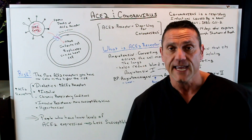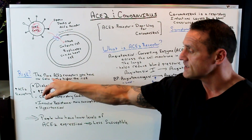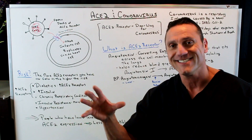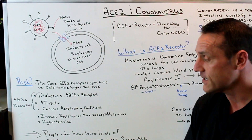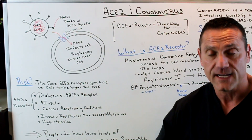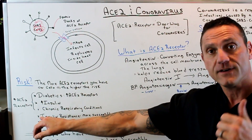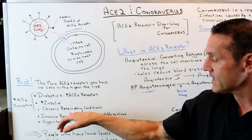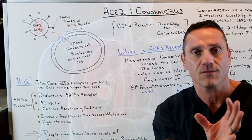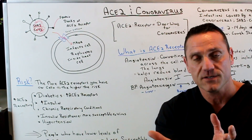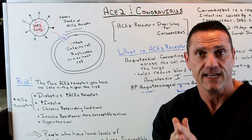The question is: who's at risk? The more ACE2 receptors you have on your cells, the greater your risk. Who does that target? The elderly, diabetics, people with uncontrolled insulin, and people with chronic respiratory conditions — because those people have more ACE2 receptors around the cell. The more ACE2 receptors you have, that's a doorway for the coronavirus to get in and infect the cell, triggering a whole immune response.